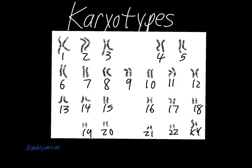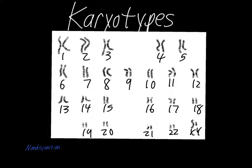The last thing we have to talk about is what happens if you get the wrong number of one of these. The answer is it depends, but it almost always results in a genetic disorder. If you were to get an extra copy or were missing a copy of chromosome 2, that would be a very significant disruption to the organism. With many of the larger chromosomes, if there's a chromosomal disorder — meaning the person got an extra one or is missing one — that's usually fairly significant and will typically cause major problems.